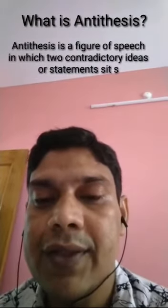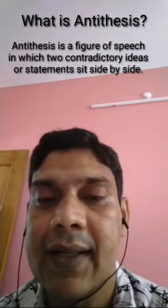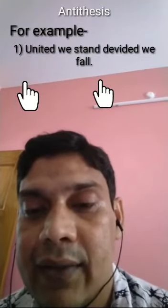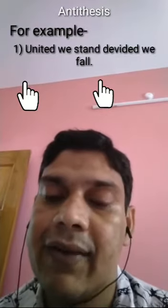The three figures of speech I am going to discuss today are based on contradiction. Antithesis is a figure of speech in which two contradictory ideas or statements sit side by side. For example, 'united we stand, divided we fall.' Here, two contradictory ideas — united and divided — sit side by side, and these two ideas are contradictory to each other. So this is an example of antithesis.